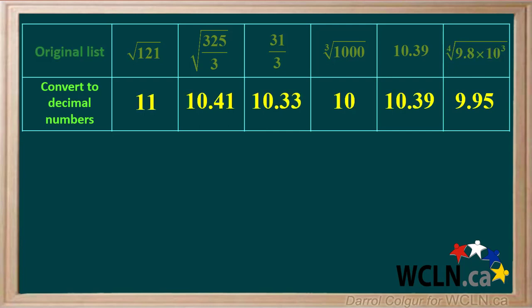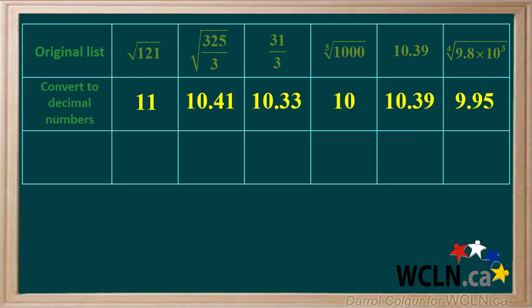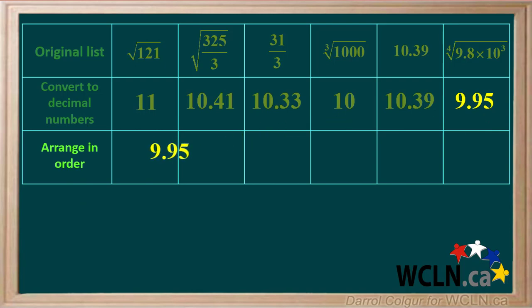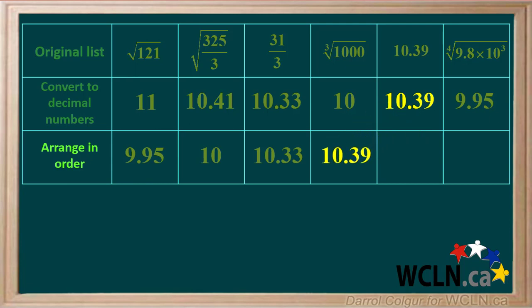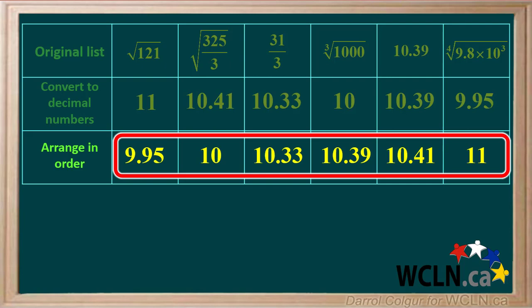Now we have all the numbers in decimal form. The smallest is 9.95, so that moves to the first box. The next in order is 10, moving to the second box. After that is 10.33, copied into the third box. Slightly higher at 10.39, that moves to the fourth box. The largest number is 11, so that moves to the last box. Now we have the decimal numbers arranged in order from smallest to largest.